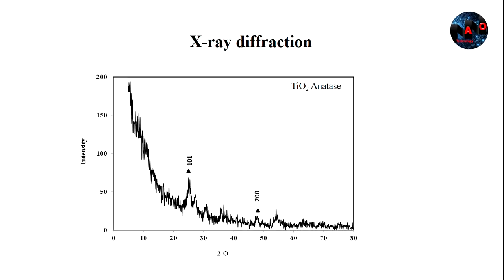This figure shows the XRD pattern of titanium dioxide nanoparticles in anatase phase. The diffraction peaks were observed at 25 and 48 degrees, indicating the formation of titanium dioxide nanoparticles in anatase phase. According to the Debye-Scherrer equation, the crystalline size of these nanoparticles is 41 nanometers.